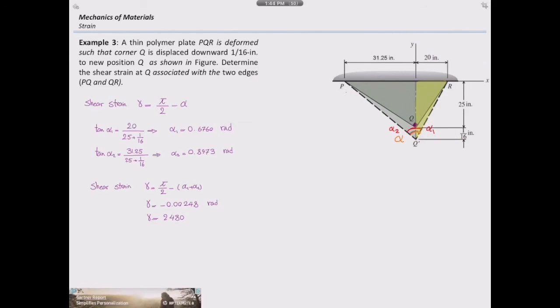If I convert that into micro radian, that gives me 2480. I ignore the sign here. I know the sign would be positive because the angle is getting smaller. All right, that is the answer of this problem.